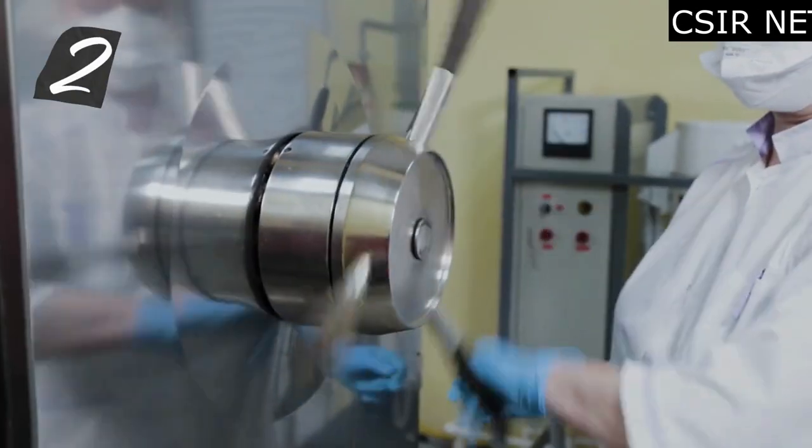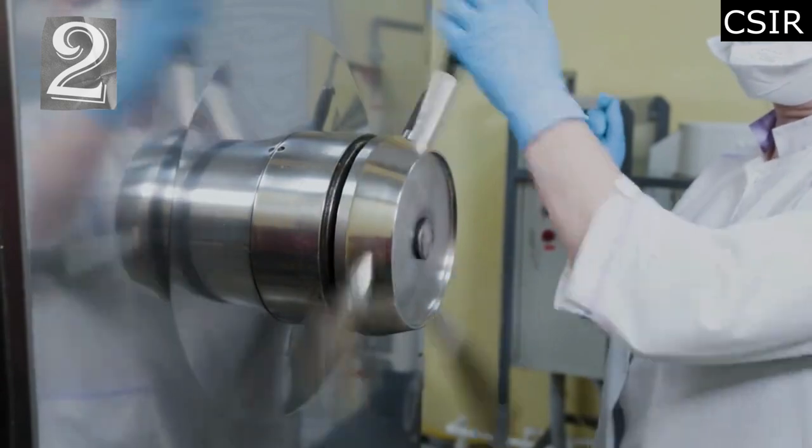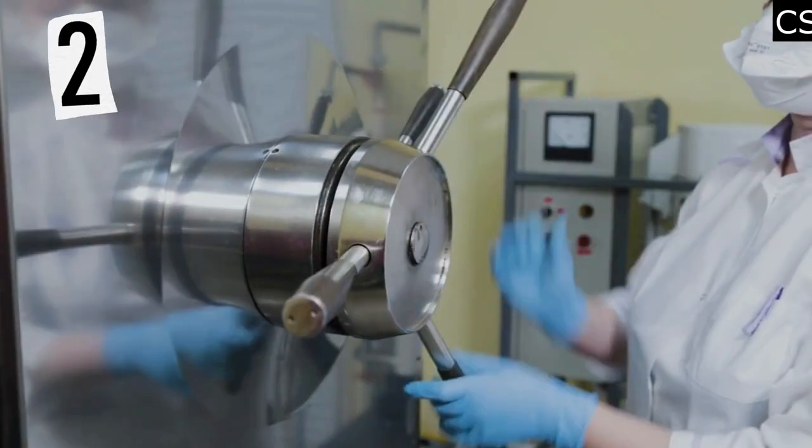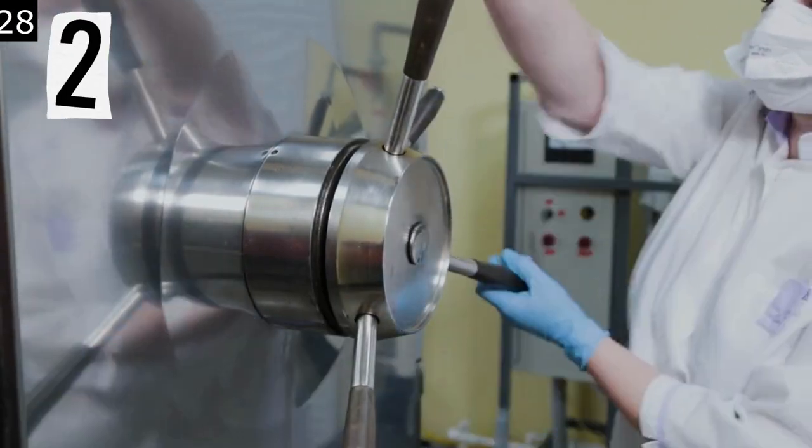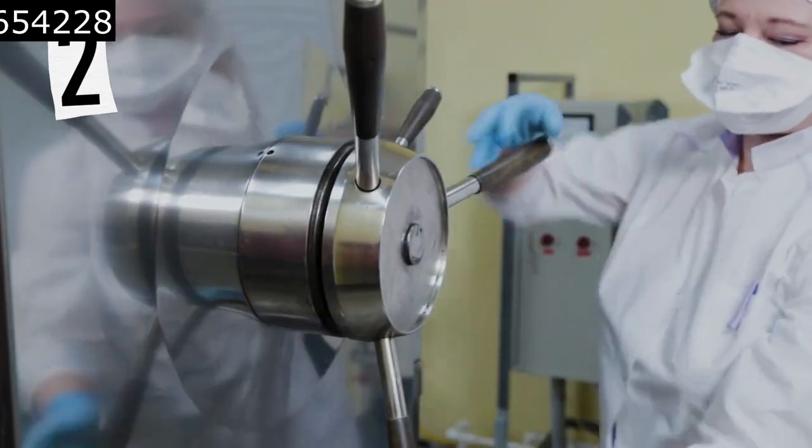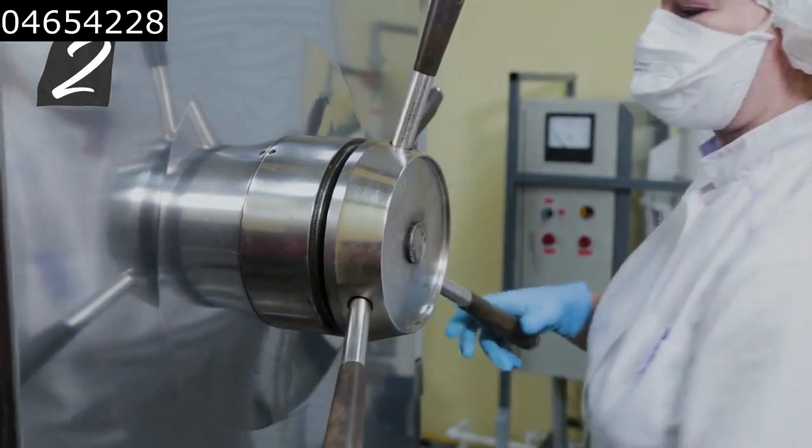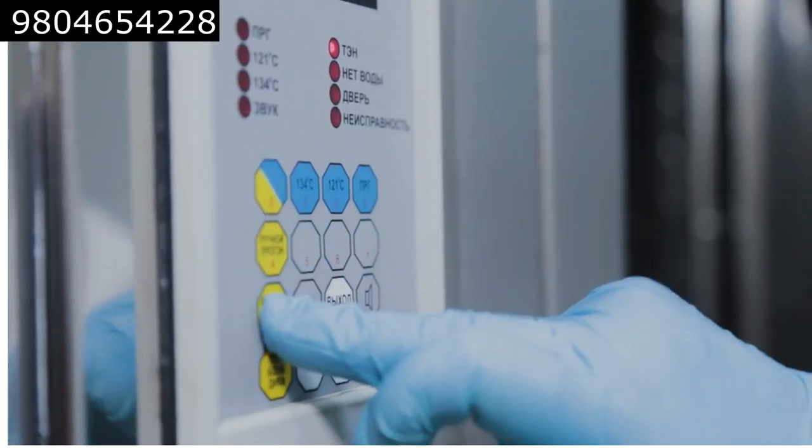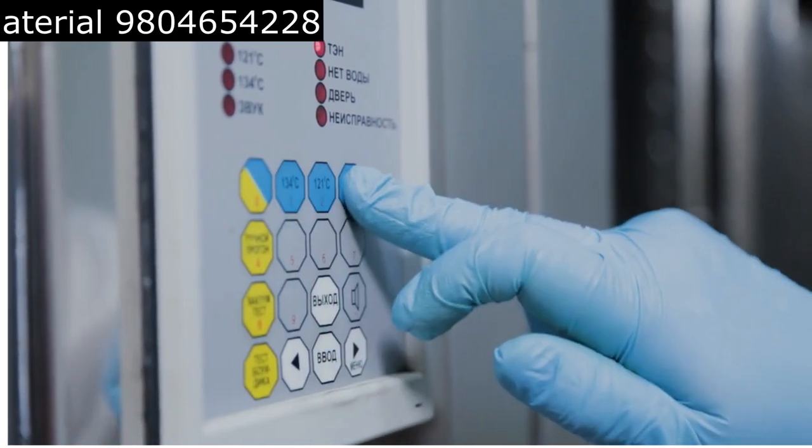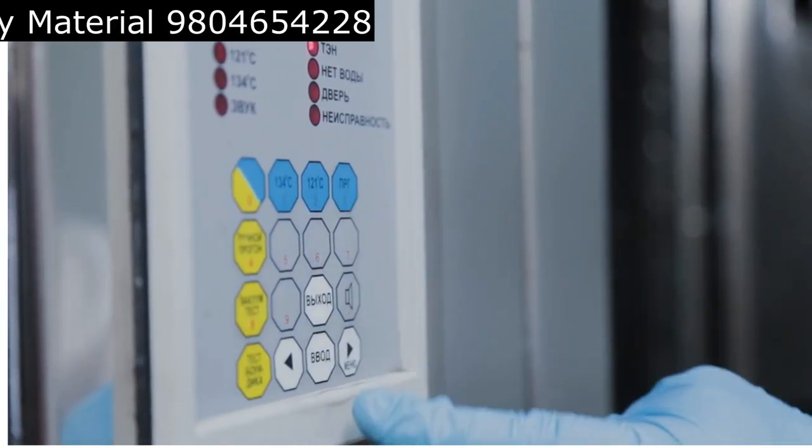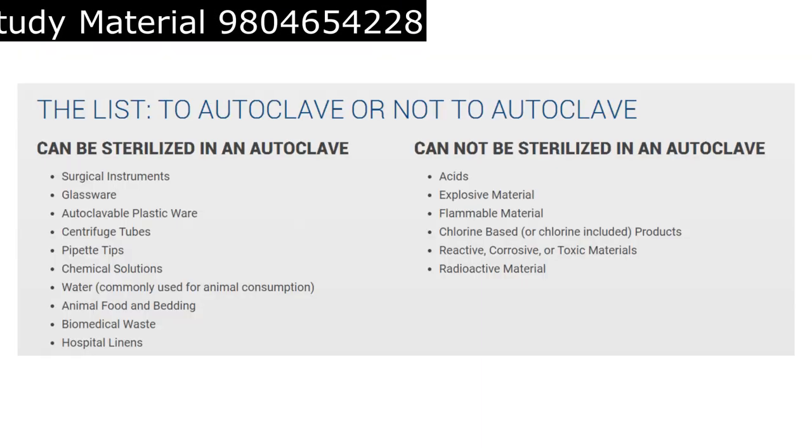Step 2 is setting the sterilization parameters. After loading the items into the autoclave, it's time to set the sterilization parameters. This includes setting the time, the temperature, and the pressure. The appropriate sterilization parameters will vary depending upon the items being sterilized, so make sure to refer to the manufacturer's instructions or guidelines for the items being sterilized.